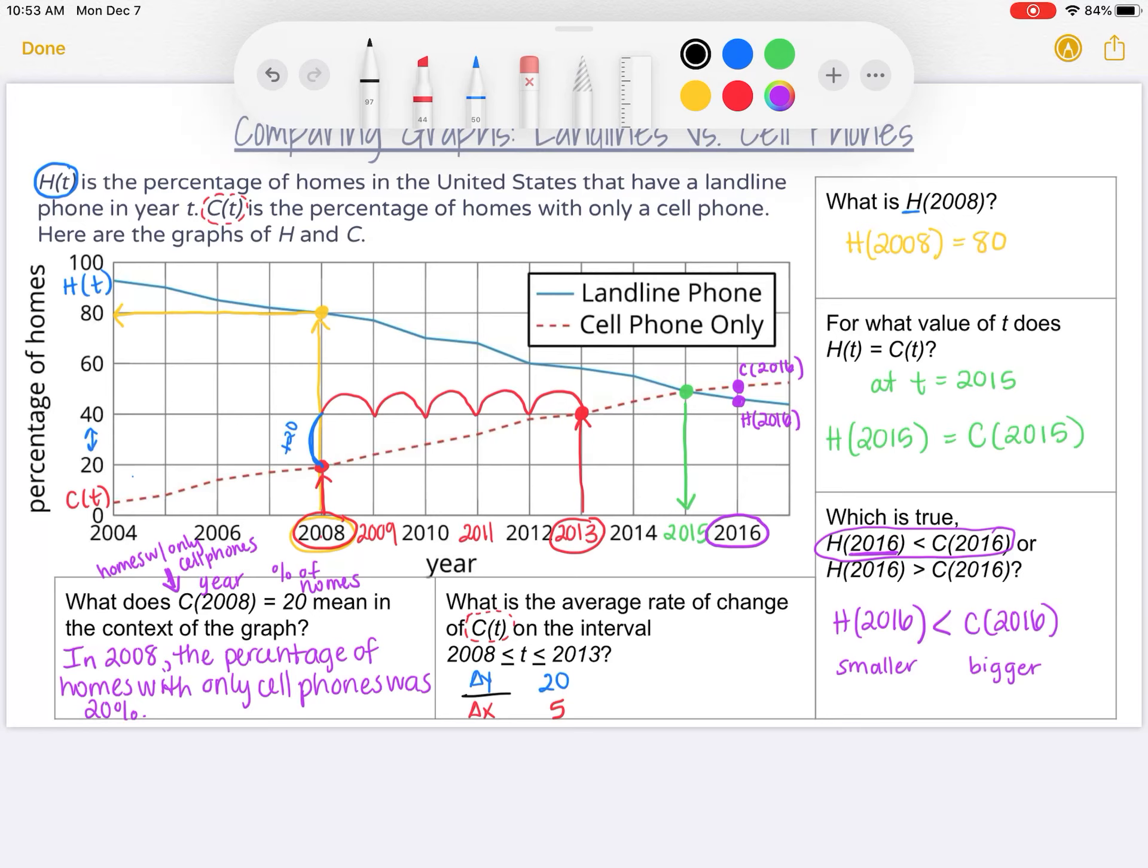It went up by 20% in five years. So I have 20 divided by 5 to give me my average rate of change. That will give me 4 as my average rate of change on that interval.